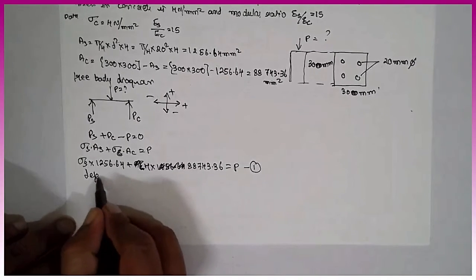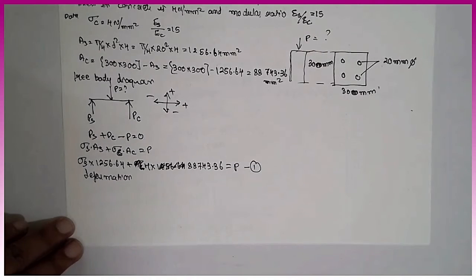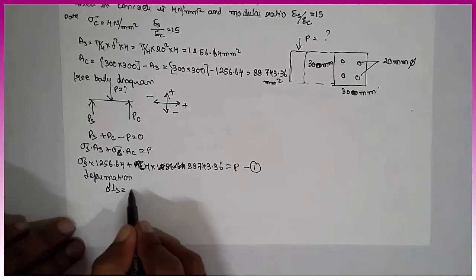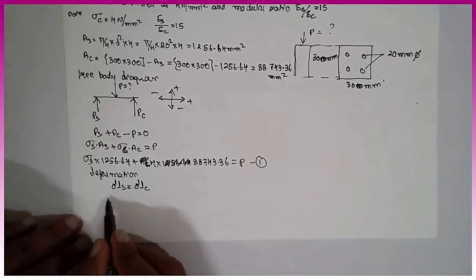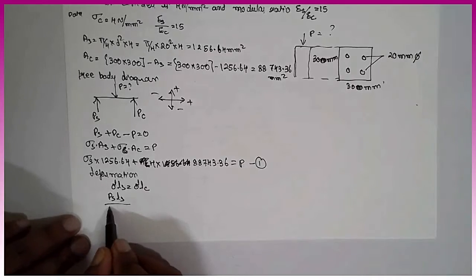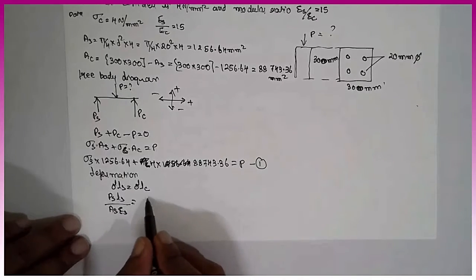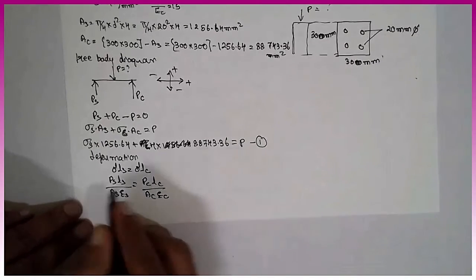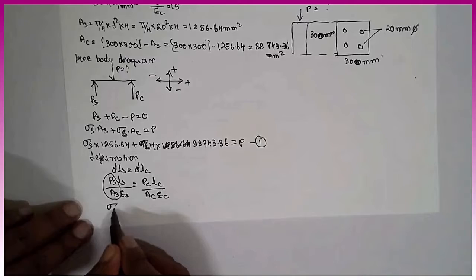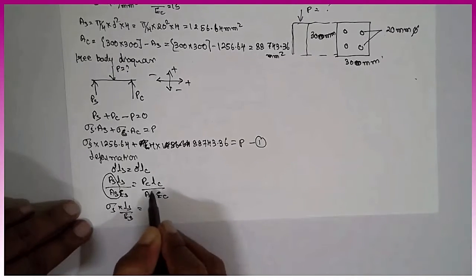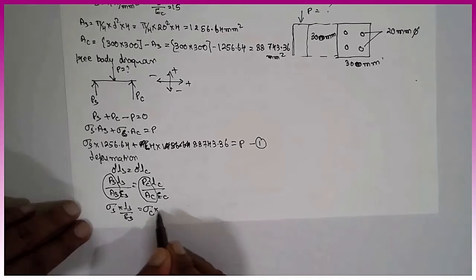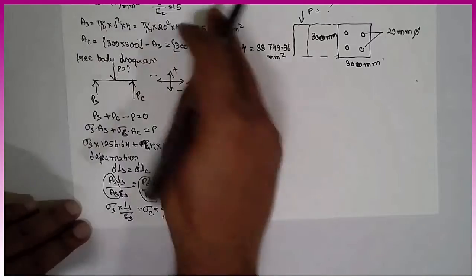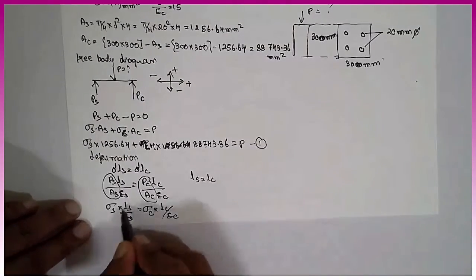Deformation. Deformation, that means the deformation of the steel is equal to the deformation of the concrete as per the concept. Delta Ls is equal to delta Lc. What is the formula? Ps Ls divided by As Es is equal to Pc Lc divided by Ac Ec. Now as per the diagram and as per the question, Ls is equal to Lc, this gets cancelled.